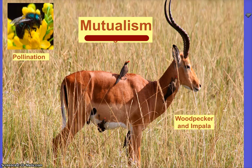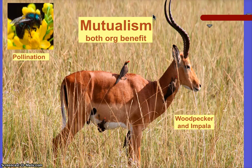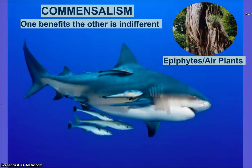Mutualism — both organisms benefit. Because I'm giving you the responses and you have to work after this, you cannot use any of my examples for your examples. If you've already submitted, you're fine. Pollination is the best example of mutualism.